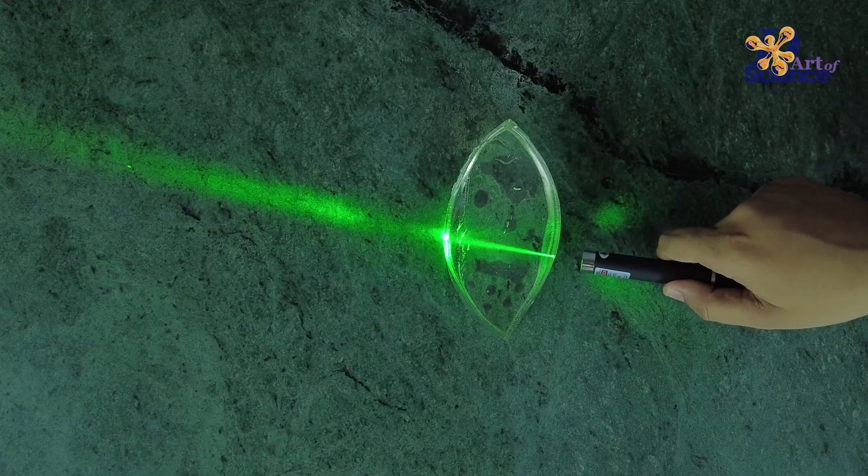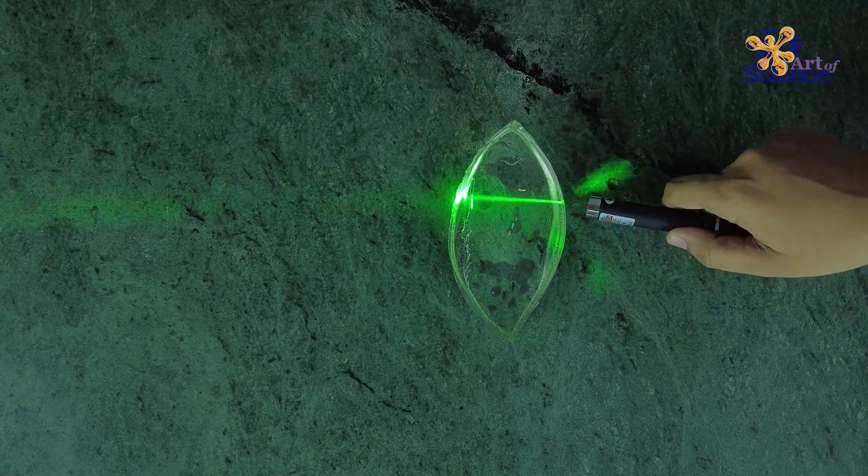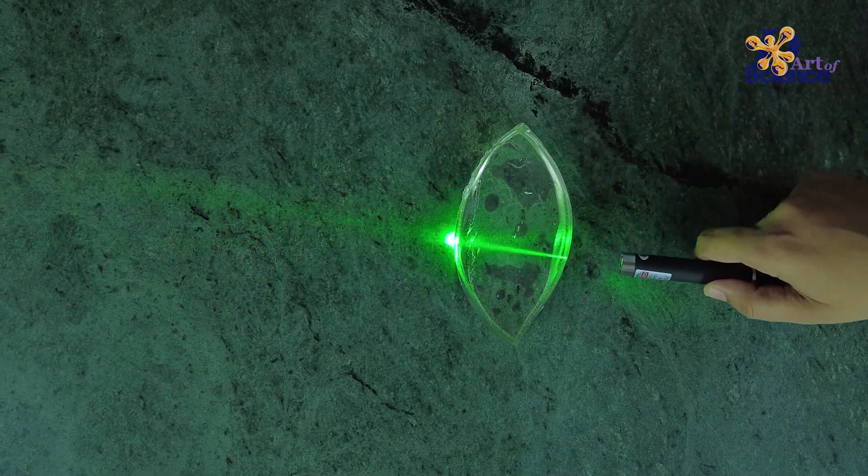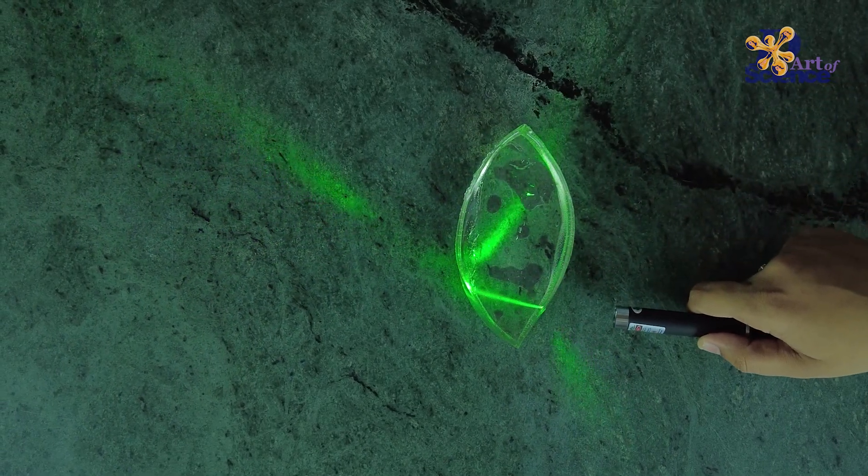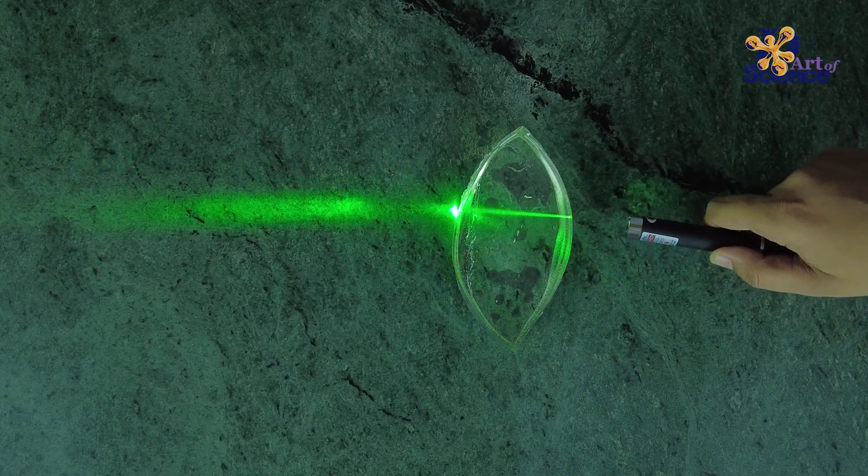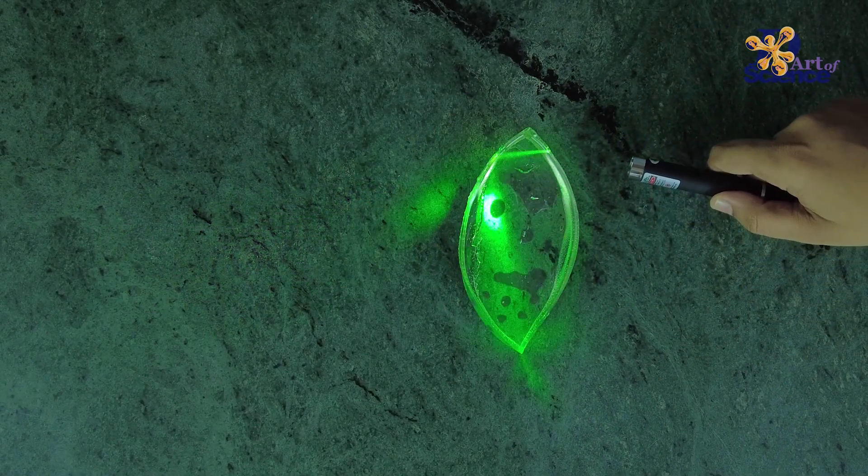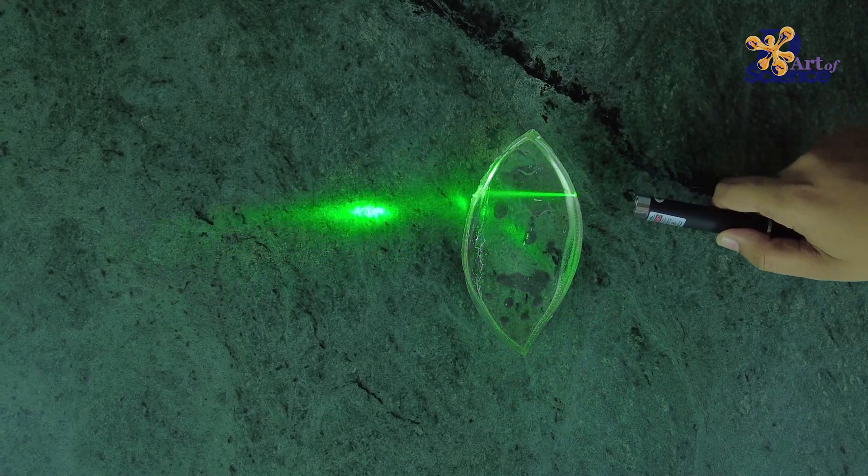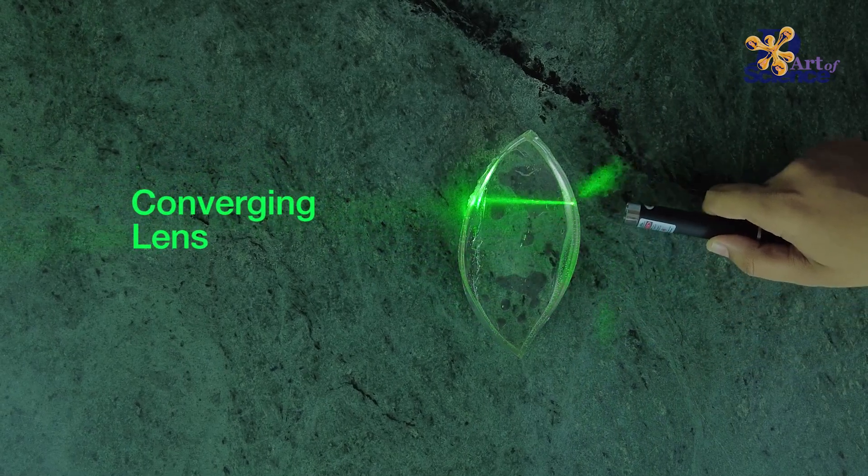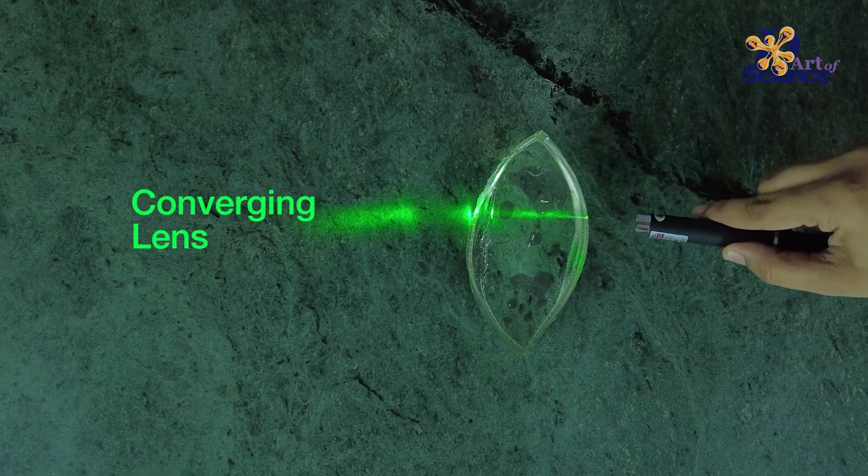Use a laser pointer on the lenses and observe the differences in directions of laser beam. When light falls on a convex lens, after refraction, the light bends inwards. The lens converges the light rays, and that's why it is known as a converging lens.